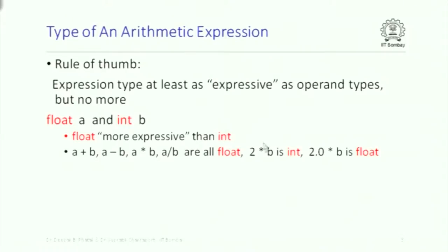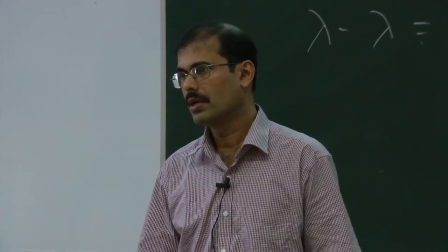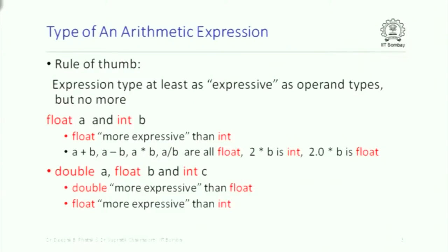So if I take float a and int p, then float is more expressive than int. All such expressions like a plus p, a minus p, a star b, a divided by b will have type float. However, 2 times b will be int because b is int and 2 is also int. 2.0 times b will be float because 2.0 is a floating point constant. There are two ways of writing floating point constants: put a decimal point, or write it in scientific notation with e plus or e minus. Double is more expressive than float, float is more expressive than int, so an expression mixing double, float, and int has type double.